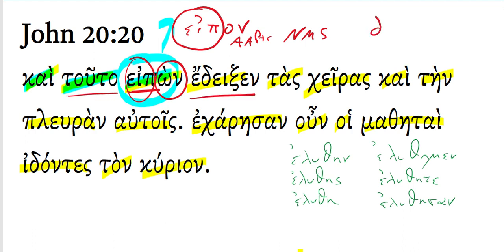He showed, that's from the verb deiknumi, to show. You can see a sigma has come in here, an augment. This is an aorist. He showed, we're going to go super literal here, the hands and the side to them.